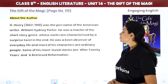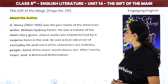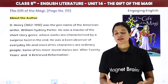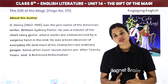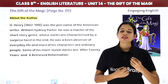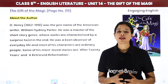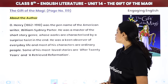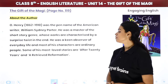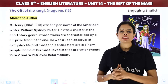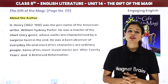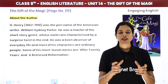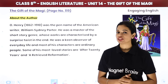He was a keen observer of everyday life, and most of his characters are ordinary people. Woh chhoti-chhoti zindagi ki cheezon mein - kis tarike se humein khushiyan milti hain, kis tarike se pain milta hai - in saari cheezon ko observe karke, woh apni stories likha karte the. Some of his most loved stories are 'After Twenty Years' and 'A Retrieved Reformation.' 'After Twenty Years' is really beautiful - there are quite a few videos on it, you can check those out on YouTube.